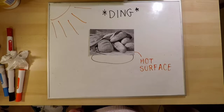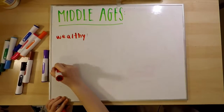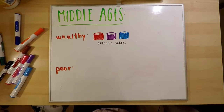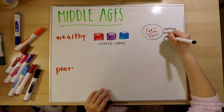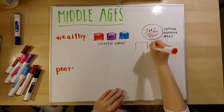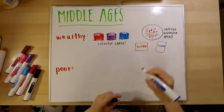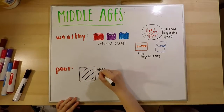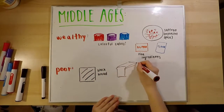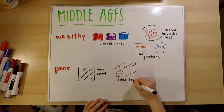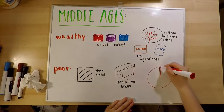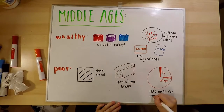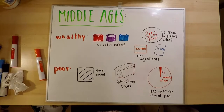It became something like bread. In the Middle Ages, there was a completely giant gap between the wealthy and the poor and what they ate. The wealthy got to eat really colorful cakes filled with expensive spices like saffron and fine ingredients like butter and flour — things that we take for granted today but were really expensive in the past. While the poor could only eat what the wealthy didn't want — black bread and sharp rye bread. Only a handful of that poor population got to have meat for their mince pies.